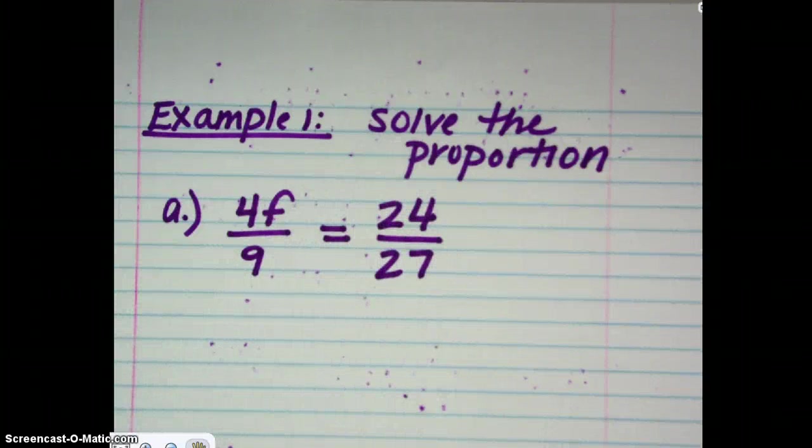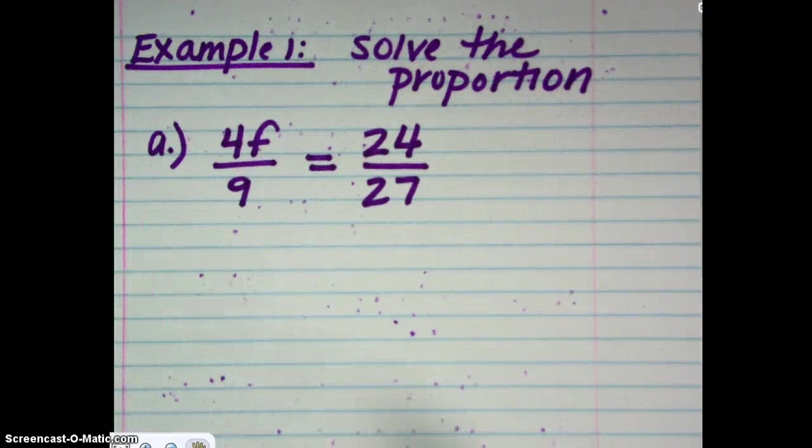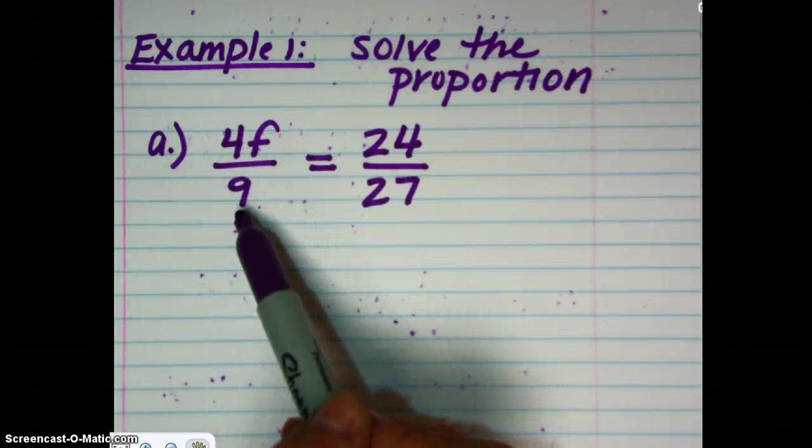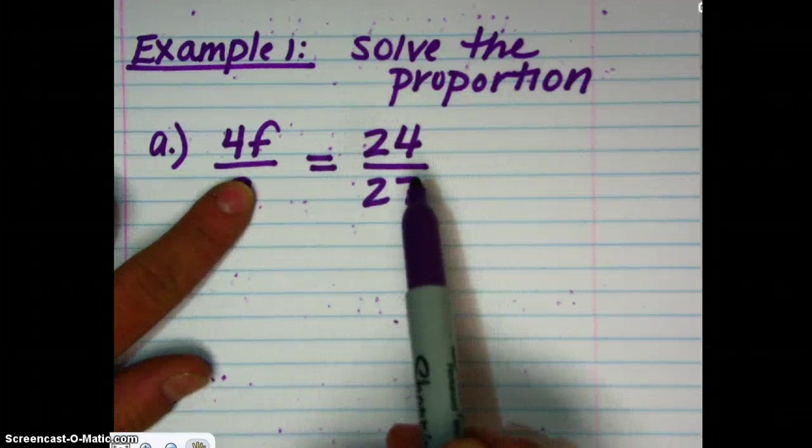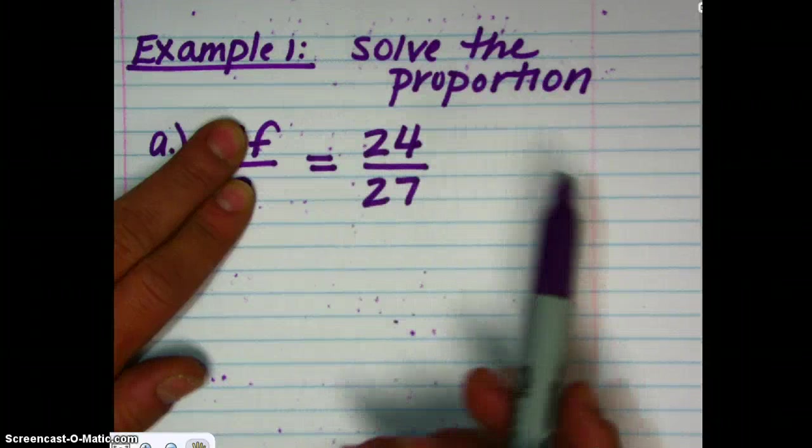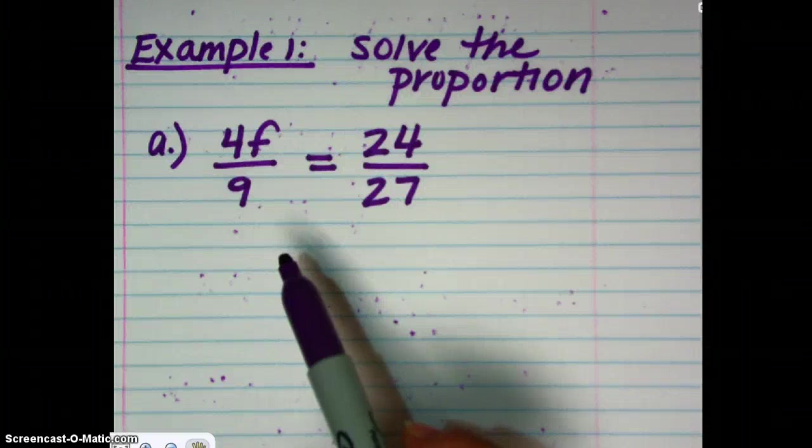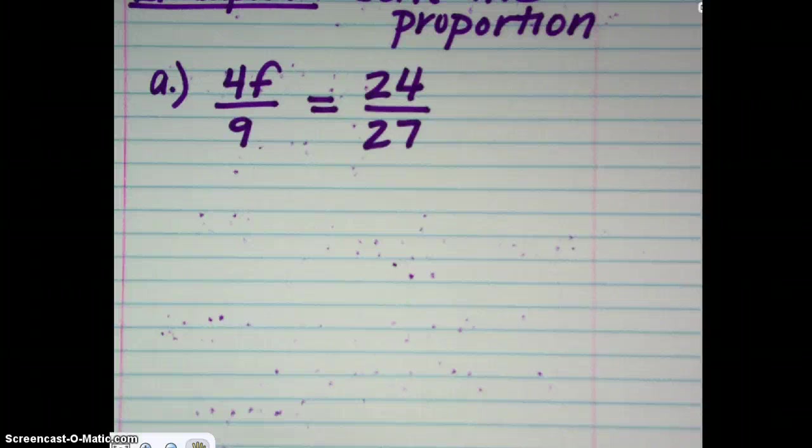Now, this is a problem that we could use our basic inverse operation skills to solve for F, because here we can see that F is being multiplied by 4, and then divided by 9. So, we could do the opposite. We could multiply both sides of the equation by 9 to eliminate this, and then divide both sides of the equation by 4, and solve for F. But, let's practice using this idea of cross products. So, what you want to do is, if you're solving a proportion using cross products, your first step is to set the cross products equal to one another.